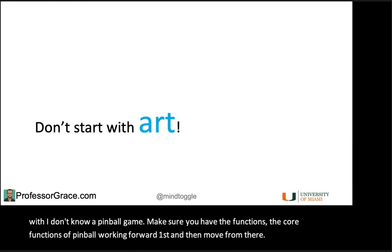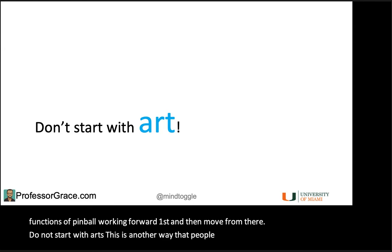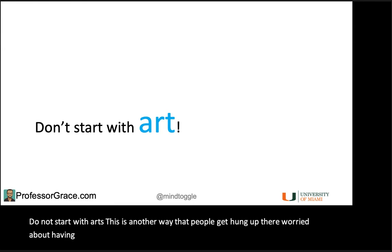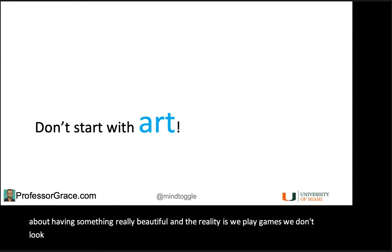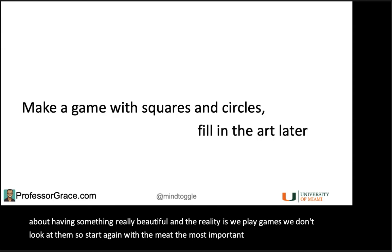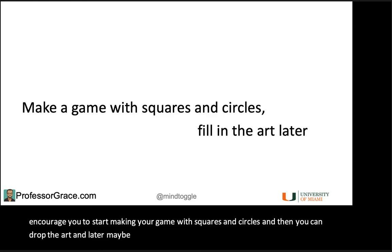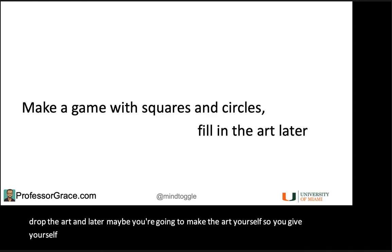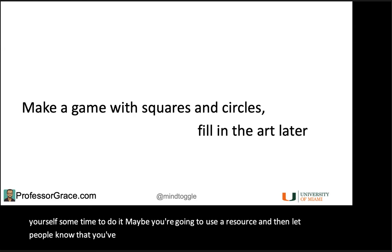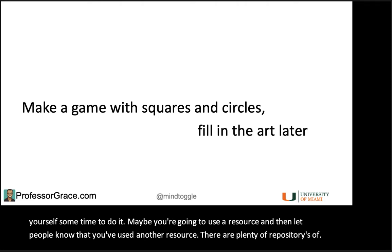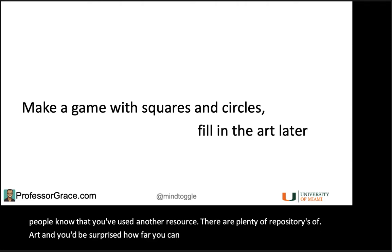Do not start with art. This is another way people get hung up. They're worried about having something really beautiful, and the reality is we play games — we don't look at them. Start with the meat, the most important stuff. I always encourage you to start making your game with squares and circles, and then drop the art in later. There are plenty of repositories of art, and you'd be surprised how far you can get with just some good squares and circles.